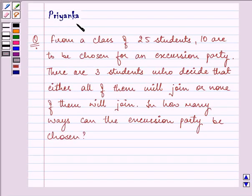Hi and how are you all today? I'm Priyanka. The question says, from a class of 25 students, 10 are to be chosen for an excursion party. There are 3 students who decide that either all of them will join or none of them will join.